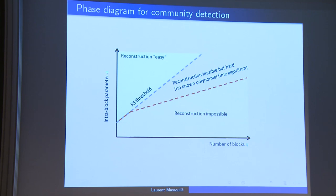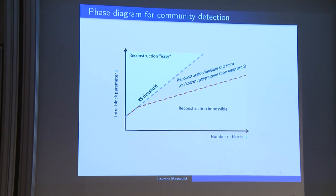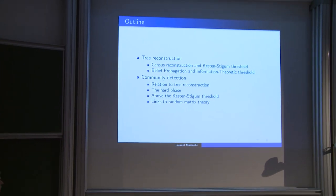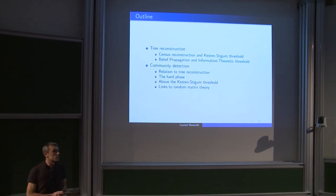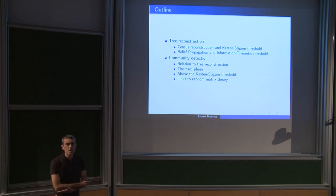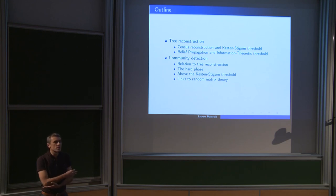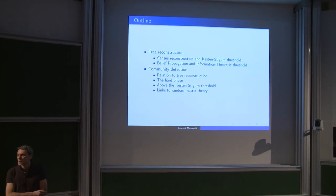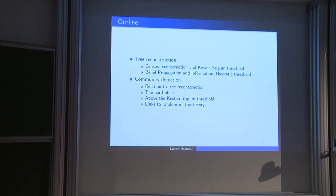The red line would be an information-theoretic threshold — where useful information appears in your data set. When you cross the blue line, that's a computational threshold where the problem becomes easy. Before that crossing, the problem is feasible but hard. That's what I want to convey for community detection. But before doing that, I'll go over the tree reconstruction problem, which is interesting in its own right and also paves the way for understanding community detection.